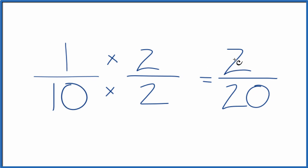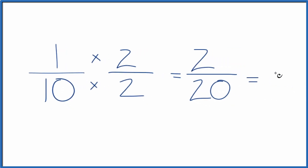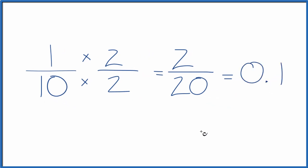If you divide 1 by 10 or 2 by 20, you'll get the same decimal, 0.1. So let's try another.